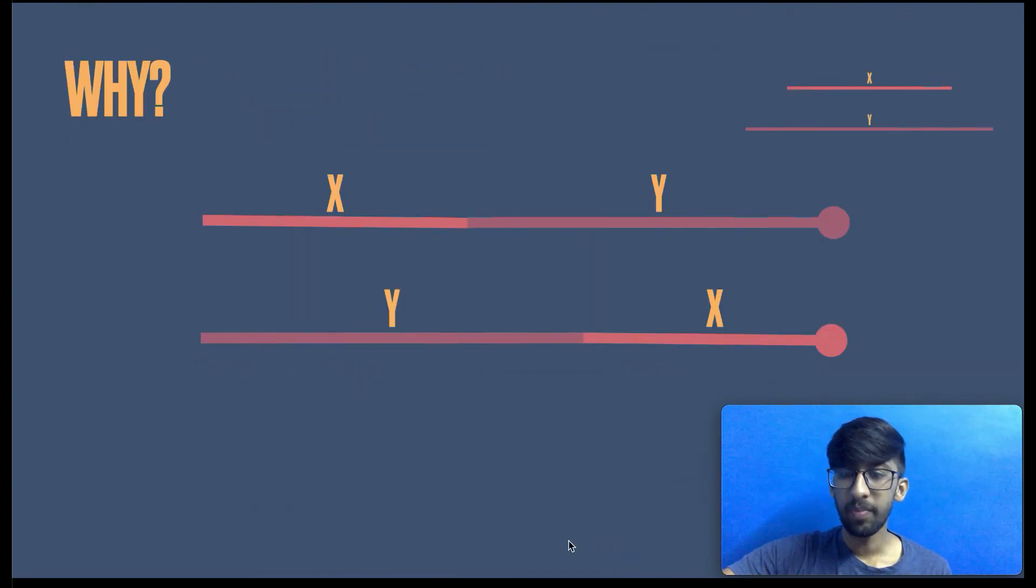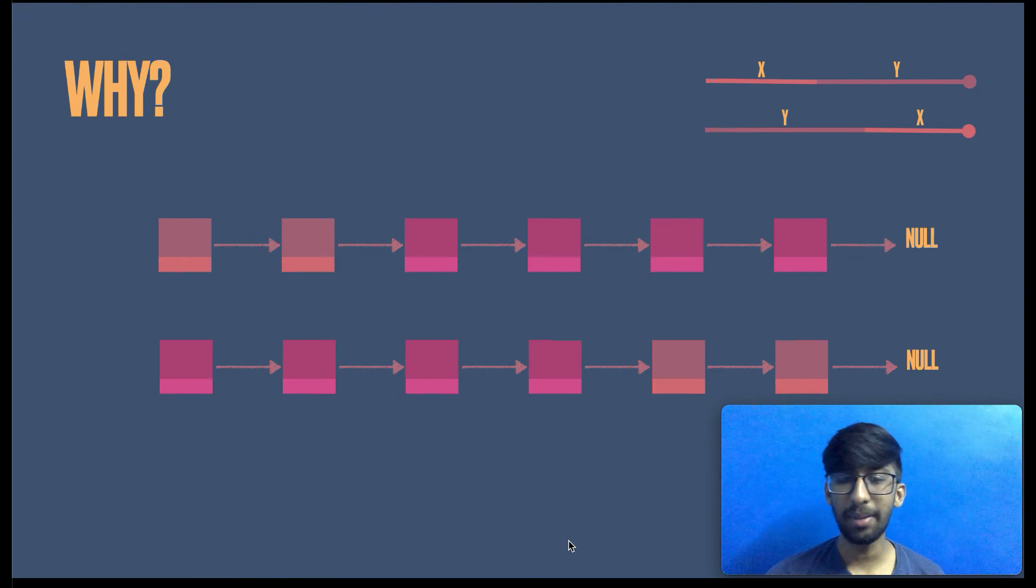Okay, here is why. The fireboy will start at X and will have travelled to the end of Y and watergirl will have travelled from Y to the end of X. Both will reach the end of the list at the same time. Therefore, they will be at null, which could be represented in linked list terms something like this. First, the fireboy will travel to the end of Y and then watergirl will travel to the end of X. And together, since they are at null, they will be equal to each other. That is, the two pointers are equal. Hence, we can terminate the loop.